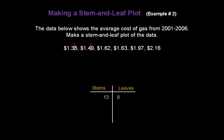The next number, $1.49, we break it between the 4 and the 9. We need a new stem of 14 and the leaf is 9. $1.62, break between the 6 and the 2. We need a new stem of 16, the leaf is 2. $1.63, we already have a stem of 16, so we're just going to add another 3 to that row.